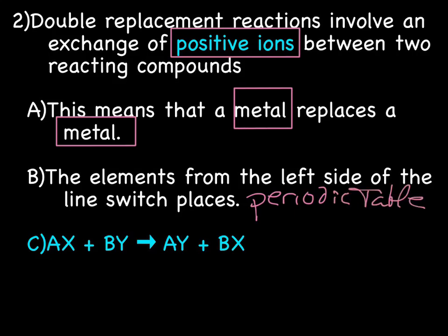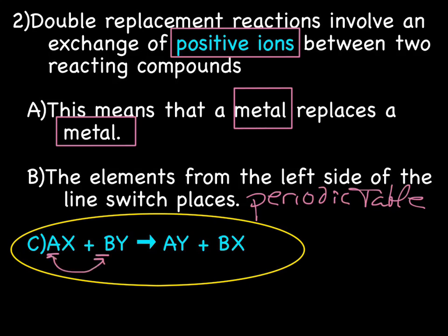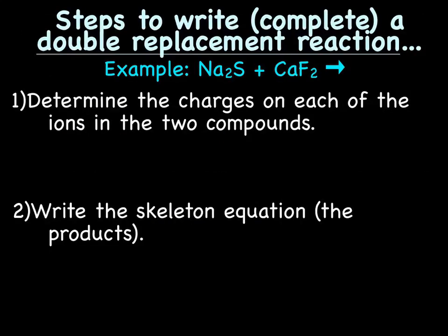So, if you look at this, this down here is our general equation for a double displacement reaction. AX plus BY produces AY and BX. So, the A and the B switch places. And those are the positives. Remember, the positives are the cations are always written first.